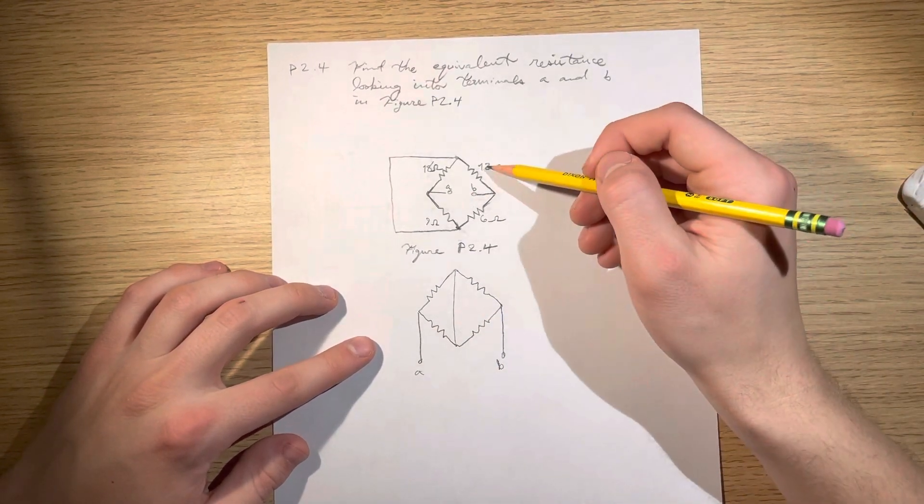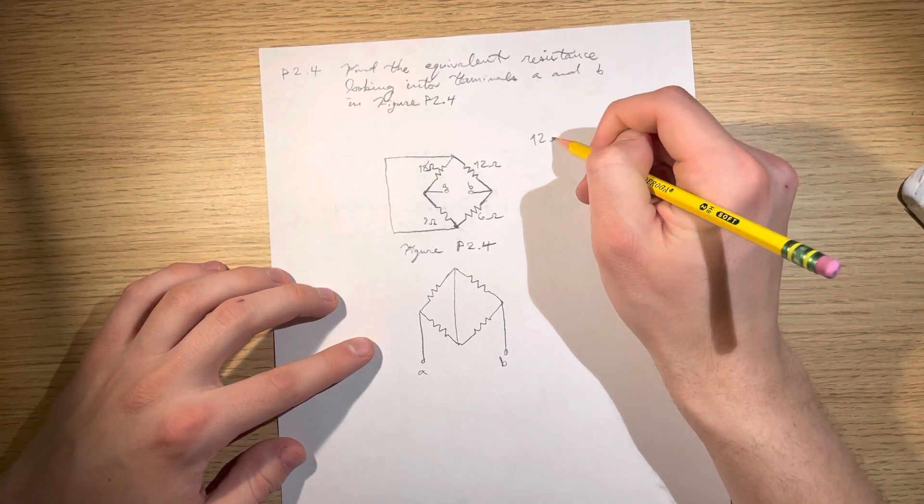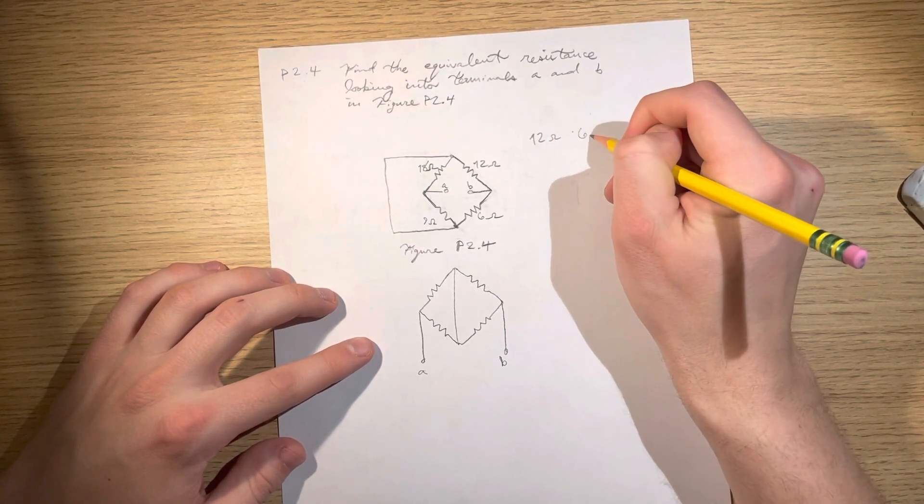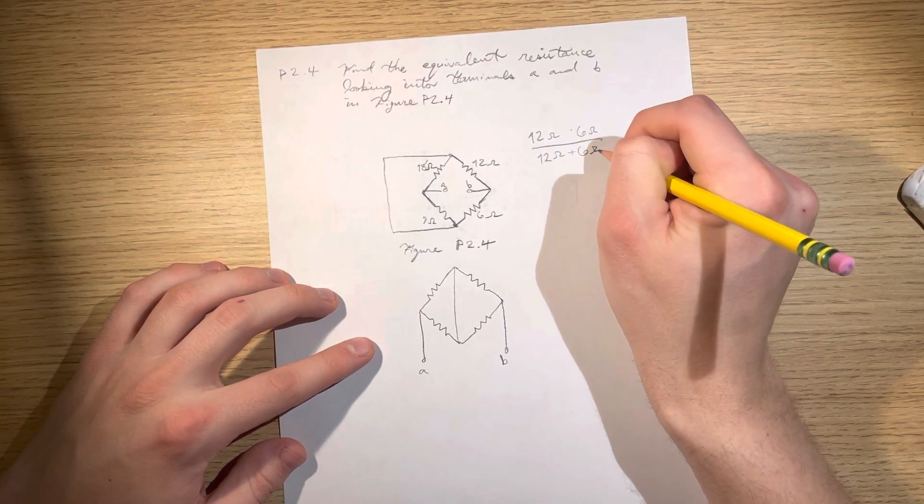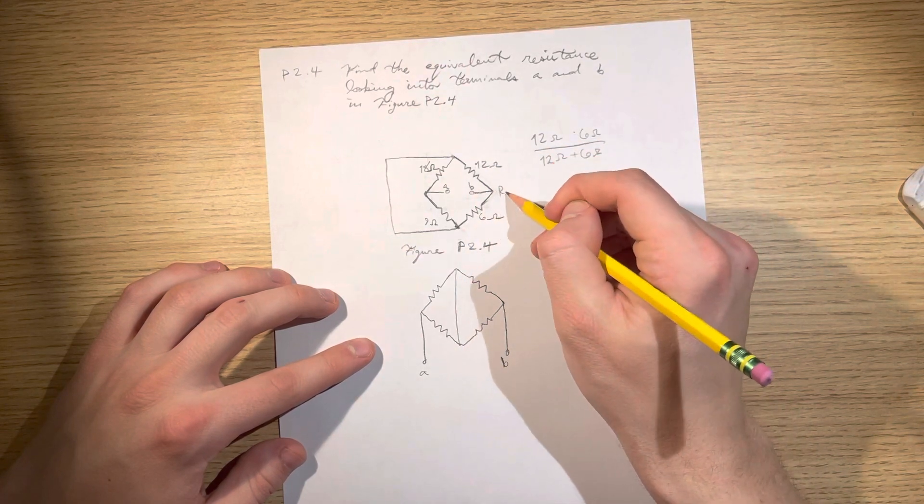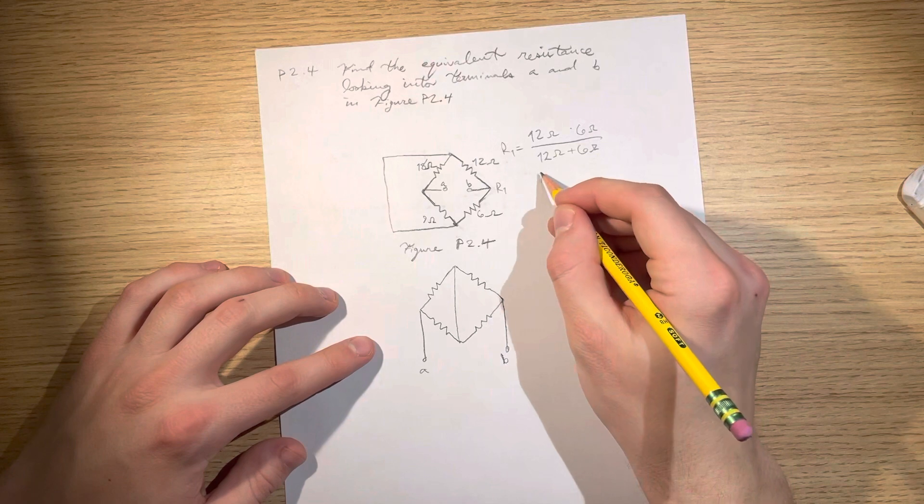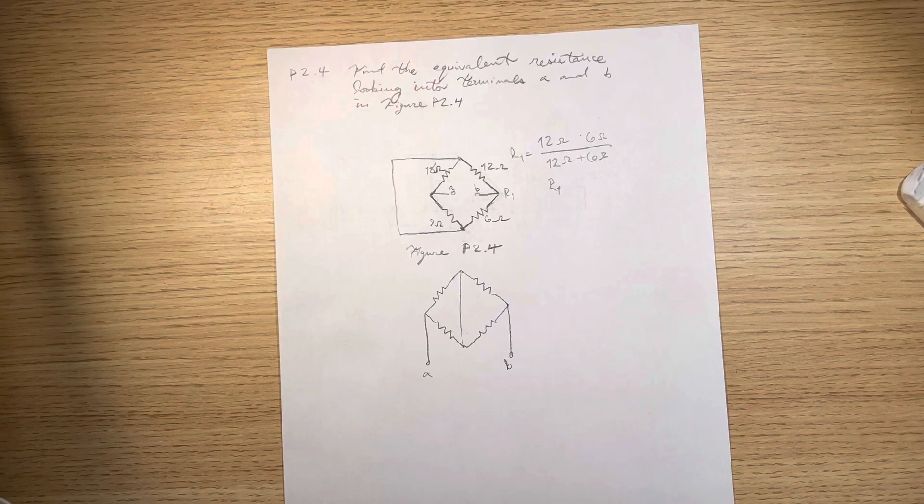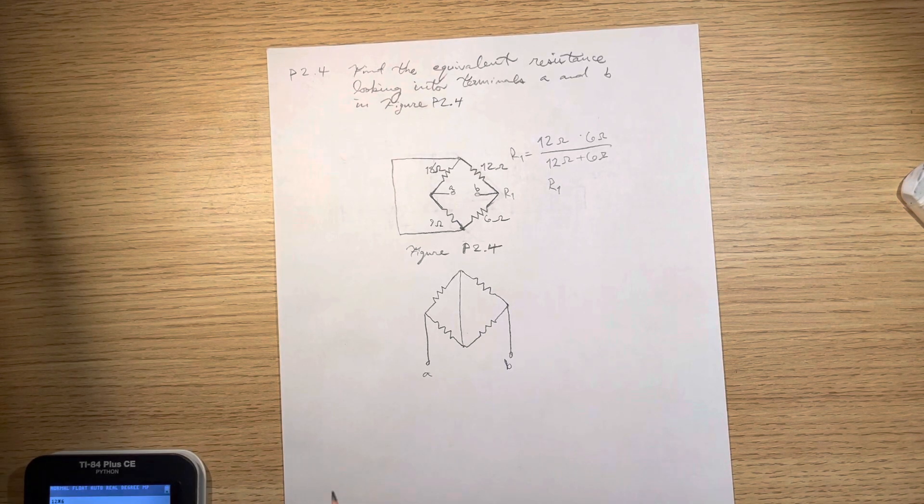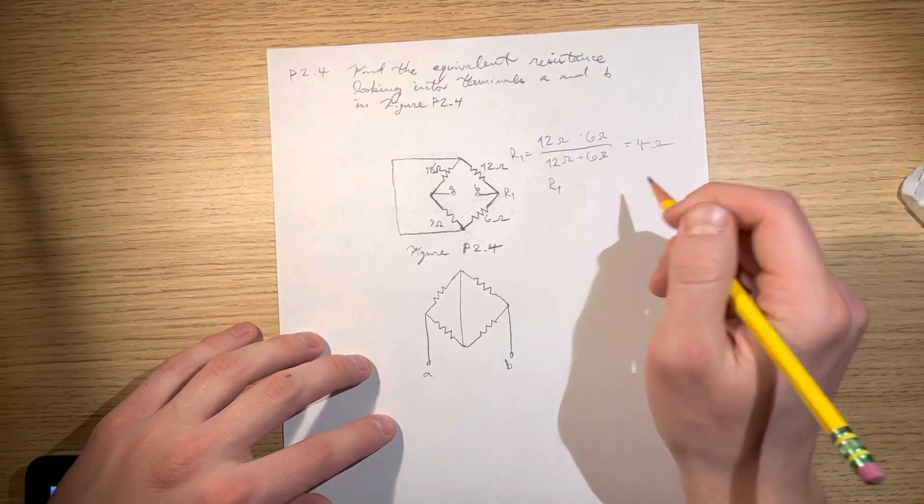So, what we're going to do is we're going to have 12 and 6 in parallel. 12 ohms by 6 ohms in parallel. So, this is R1. Get my calculator out. 12 times 6 divided by 12 plus 6 gives us 4. 4 ohms.